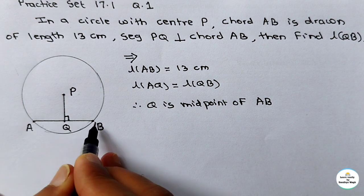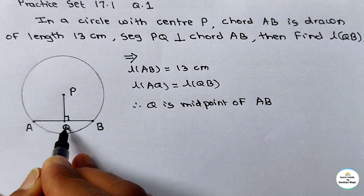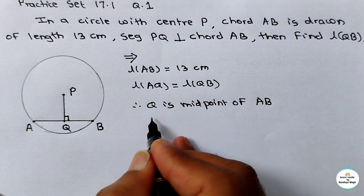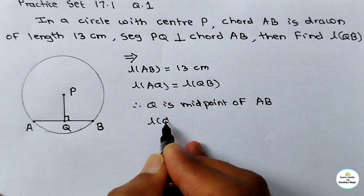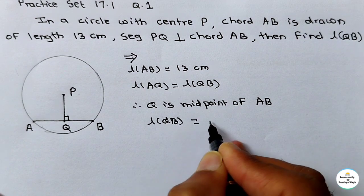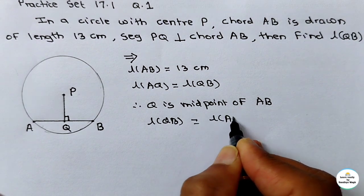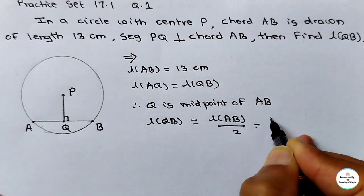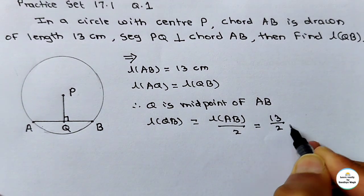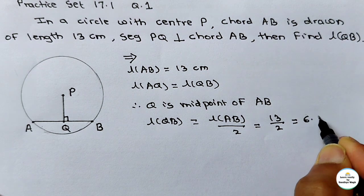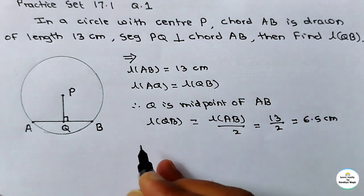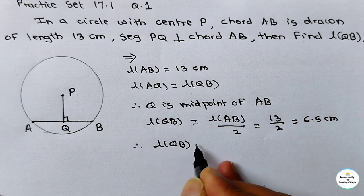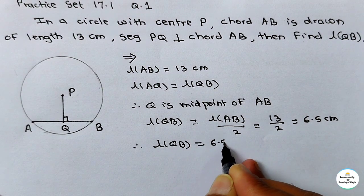AQ is equal to QB, that is QB is half of AB. So length QB equals length AB divided by 2, that is 13 divided by 2. The answer is 6.5 cm. So our required answer: length QB is equal to 6.5 cm.